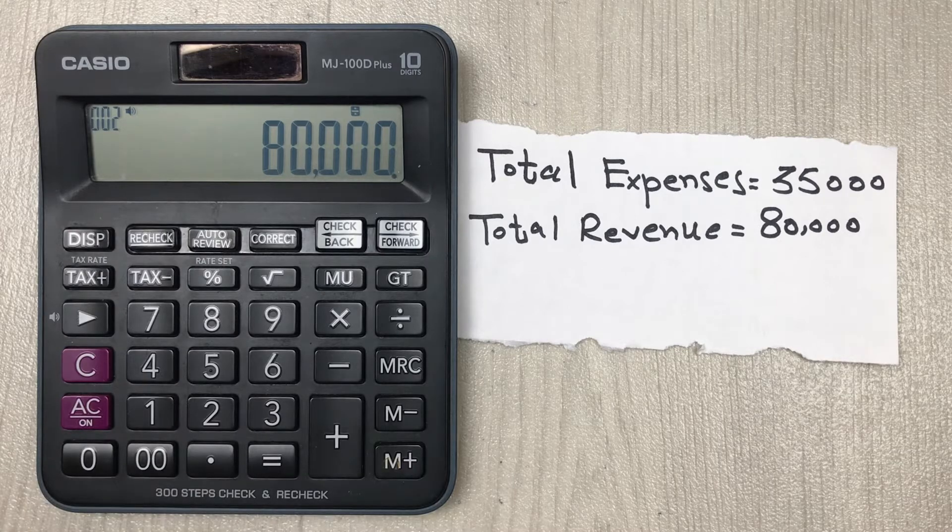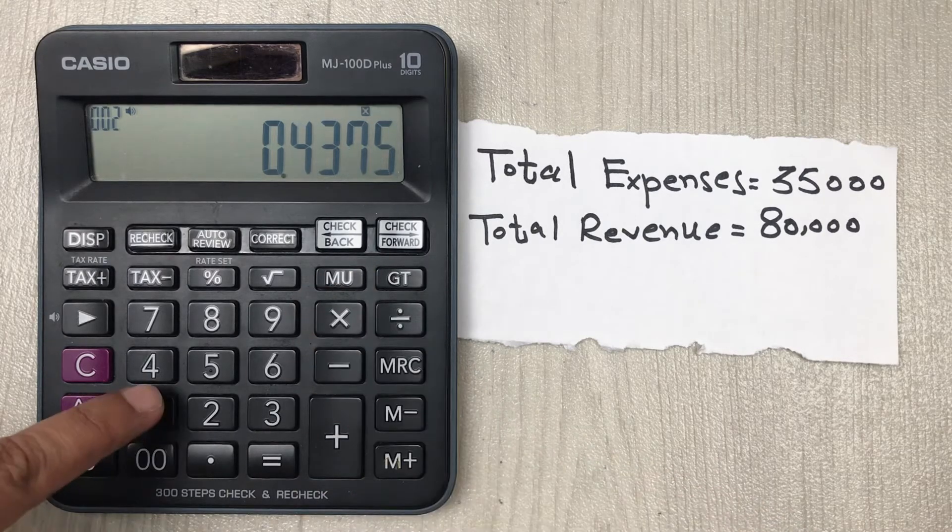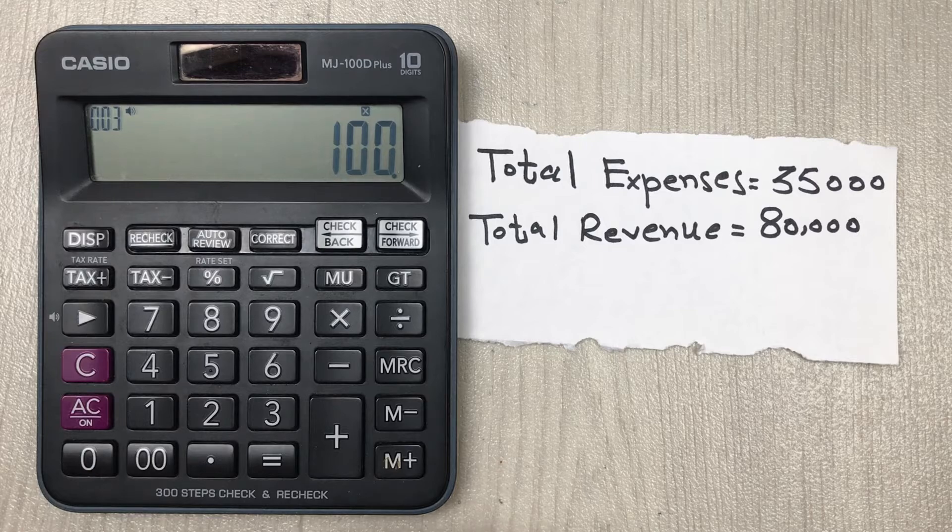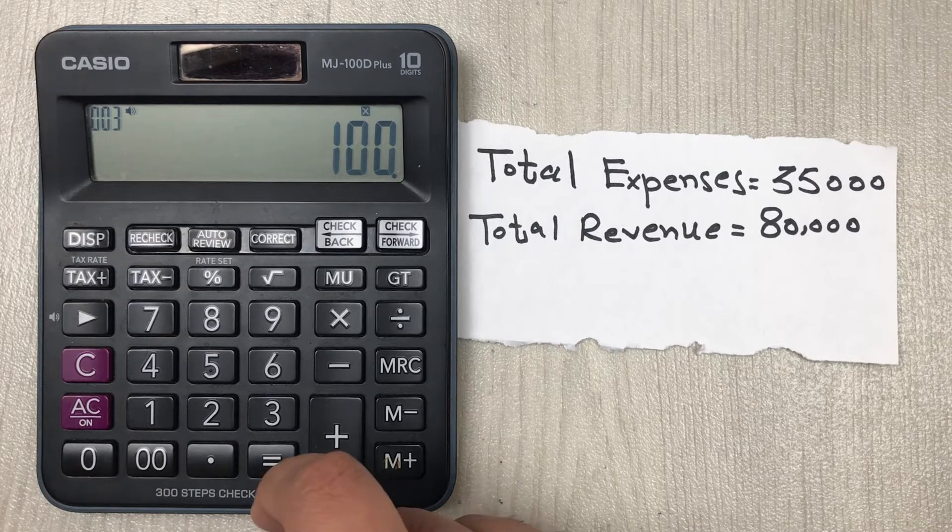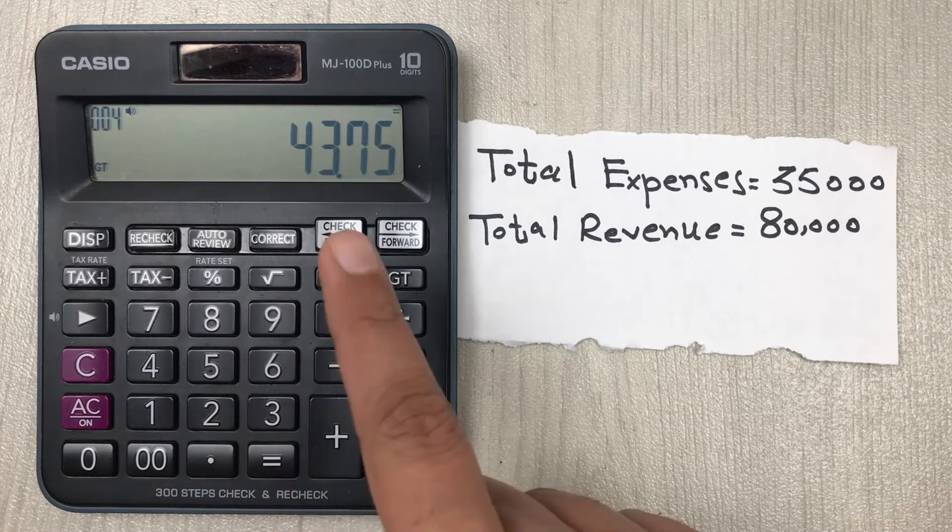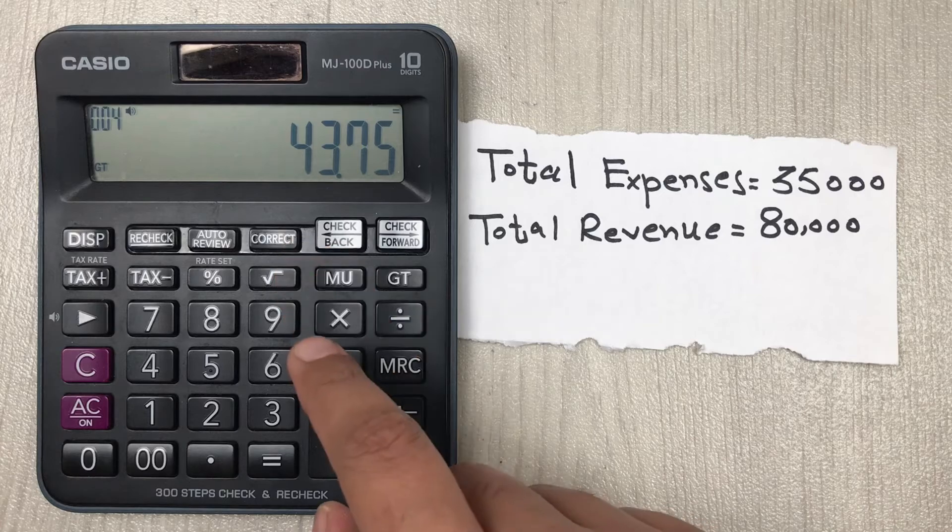So multiply by 100 and then we press the equal button. Here is our answer: 43.75 percent is our percentage of sales to expenses.